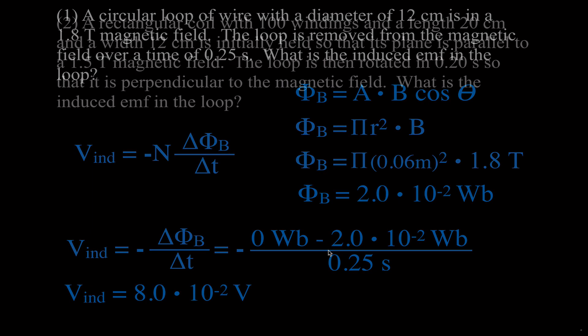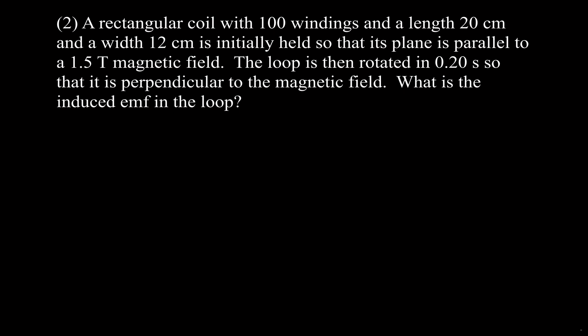Problem two: we have a rectangular coil with 100 windings. Its dimensions are 20 centimeters by 12 centimeters, and it's in a 1.5 Tesla magnetic field. It's initially held so that the plane of the coil is parallel to the magnetic field. The loop is then rotated in 0.20 seconds so that the coil is perpendicular to the magnetic field, and we want to know the induced EMF.